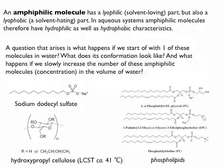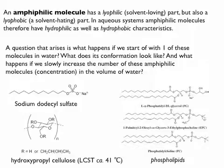If you increase the dose, a number of molecules will be dissolved in water as unimers and a number will go to these interfaces - the air-water interface or the side of your beaker. At a certain point you've saturated those interfaces, and if you still increase the dose, you oversaturate the continuous water phase. This is not favorable for the molecule because the hydrophobic parts do not like to be in contact with water, and as a result they tend to aggregate.